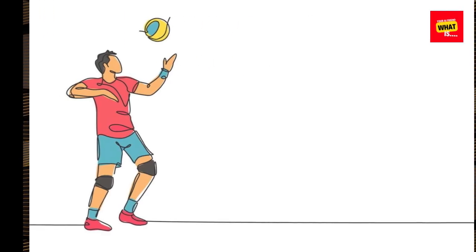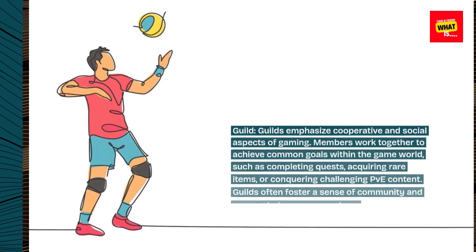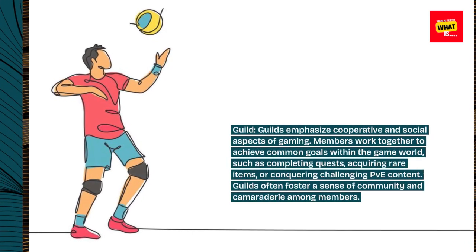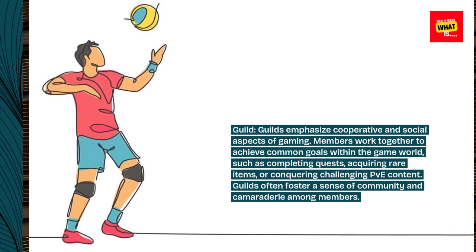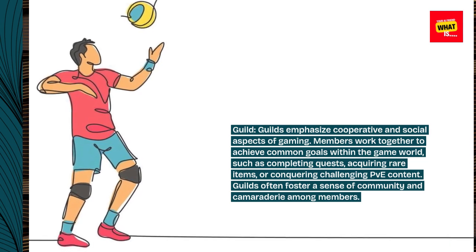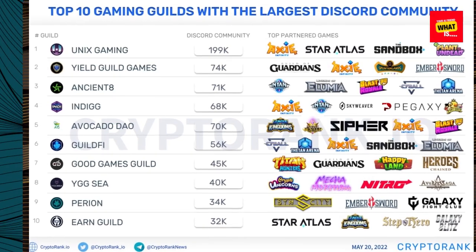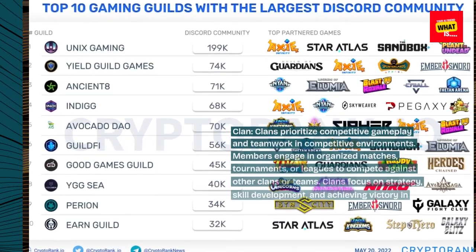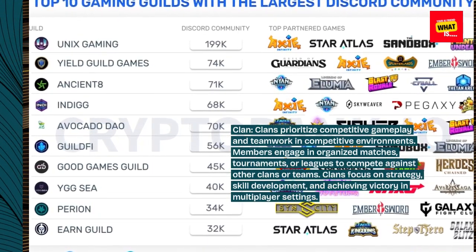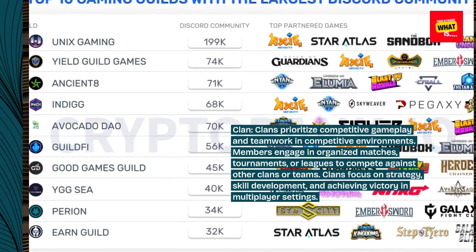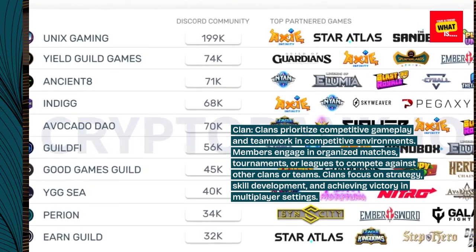Focus and Activities — Guild. Guilds emphasize cooperative and social aspects of gaming. Members work together to achieve common goals within the game world, such as completing quests, acquiring rare items, or conquering challenging PvE content. Guilds often foster a sense of community and camaraderie among members. Clans prioritize competitive gameplay and teamwork in competitive environments. Members engage in organized matches, tournaments, or leagues to compete against other clans or teams. Clans focus on strategy, skill development, and achieving victory in multiplayer settings.